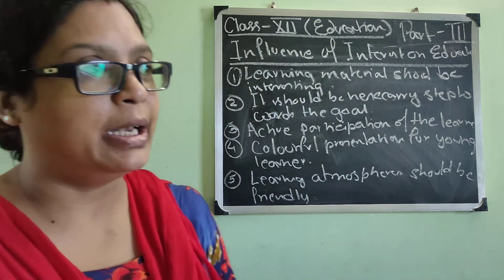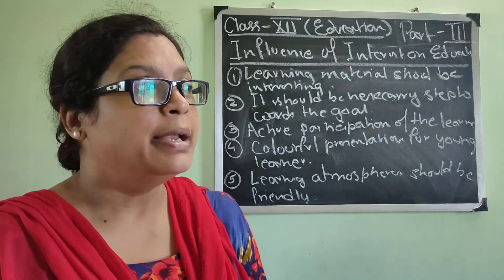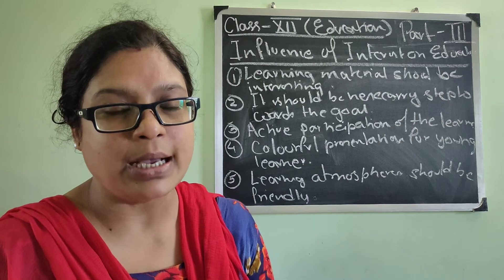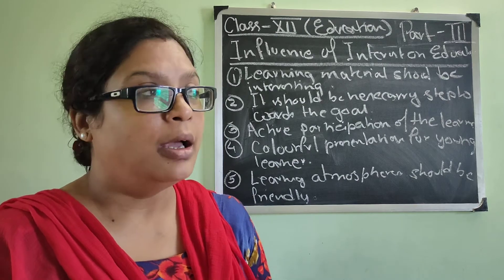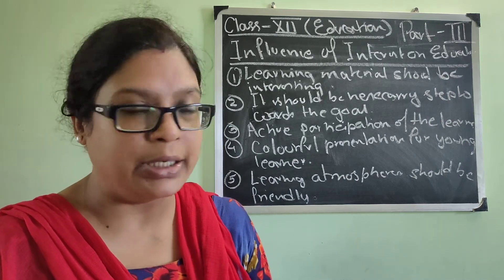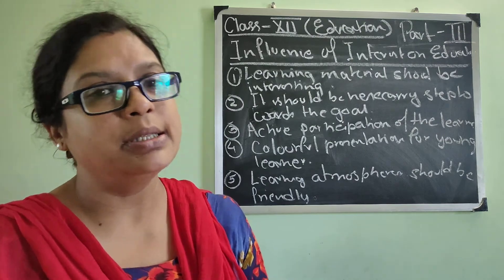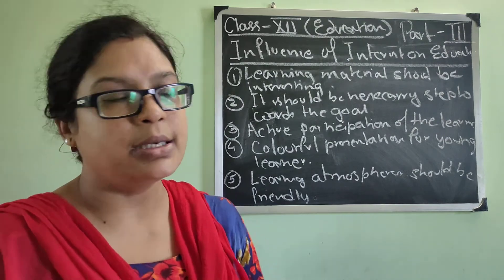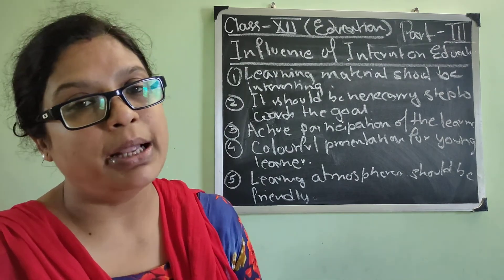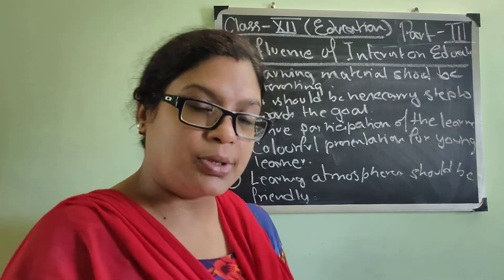So that is all for today. Next time we are going to start with Spearman and Thurston's theory of intelligence. We will first read about what intelligence is and its characteristics, and then move on to Spearman and Thurston's theory. Thank you so much.